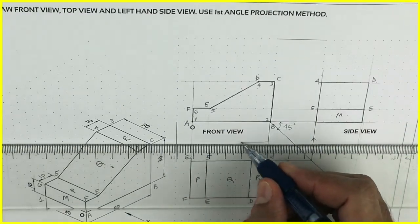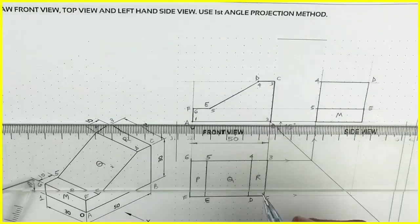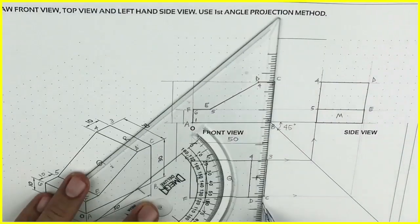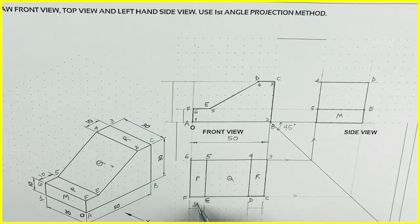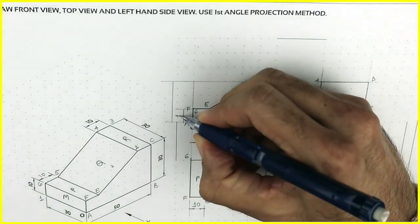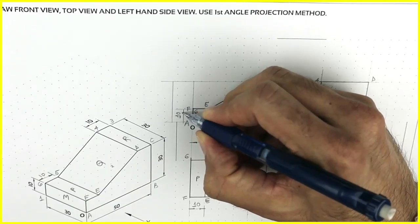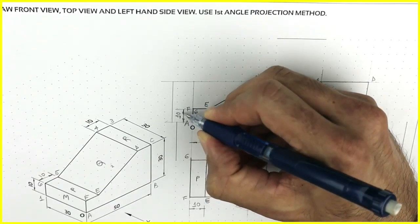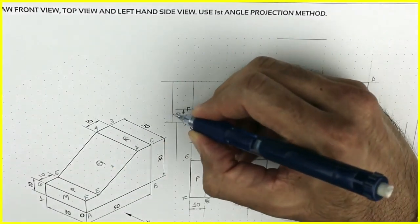Now we will do dimensioning. Now remember one thing. Smaller dimension will be always inside and the bigger one will be outside.